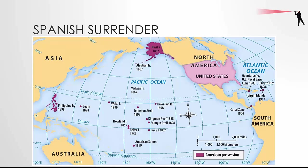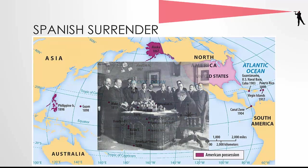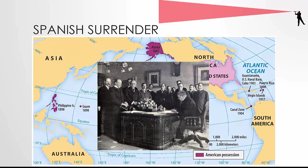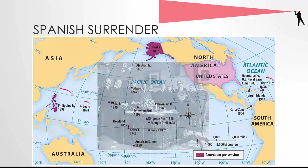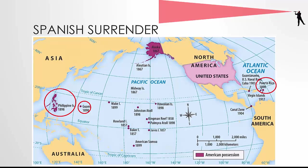The Spanish-American War lasted only three months. For some Americans, that was a symbol more of their military might than of Spain's military decline. Following their naval victory in the Philippines, American forces joined Filipino revolutionary forces and defeated the Spanish. The Treaty of Paris was signed in December of 1898. Spain surrendered Guam, Puerto Rico, and the Philippines to the United States in exchange for $20 million.